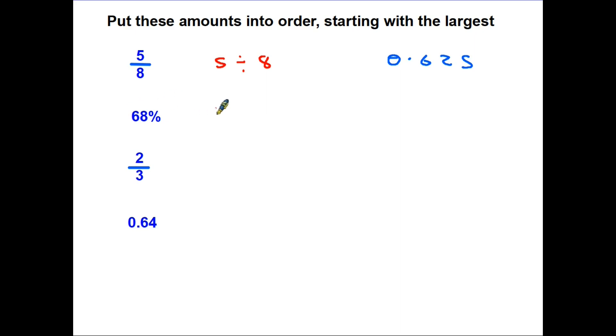Here we have a percentage, so we need to know the method of converting a percentage into a decimal. In this instance, we divide by 100, so 68 divided by 100 becomes 0.68.